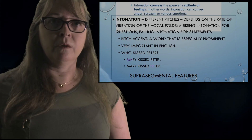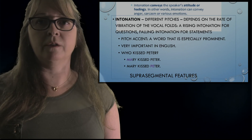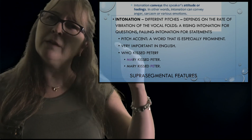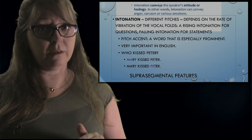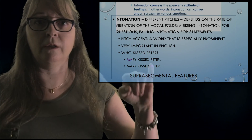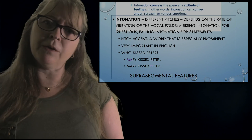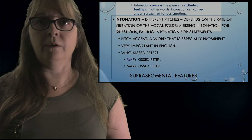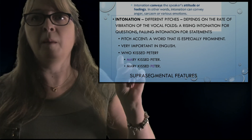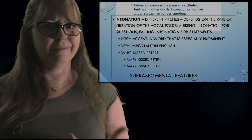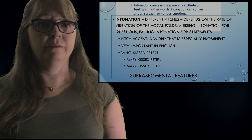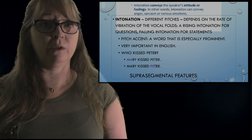Intonation is the fourth supersegmental. Intonation expresses attitude and feelings. Different pitches depend on the rate of vibration of the vocal cords — rising intonation, falling intonation. Pitch accent is a word that's especially prominent. In English, this is very important: 'Who kissed Peter?' — 'MARY kissed Peter' stresses who did it. But 'Mary kissed PETER' stresses who was kissed. It's different depending on what information you want to highlight.